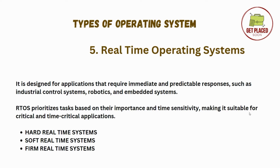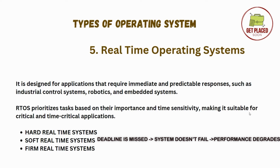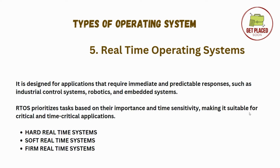Moving ahead, we have soft real-time systems. If the deadline is missed, the system does not fail — only the performance degrades. For example, video streaming services like Netflix: buffering and small delays are tolerated, and there will not be a heavy damage or consequence.